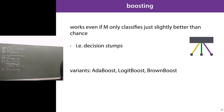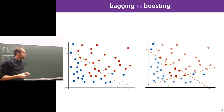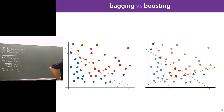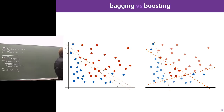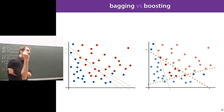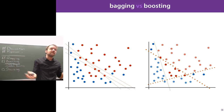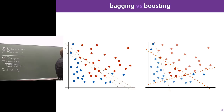Comparing bagging to boosting for linear classifiers on a nonlinear dataset: bagging gives some variation but classifiers generally pick roughly the same area, so there's not a lot of variance in the ensemble. With boosting, re-weighting data means easy points get much lower weight, producing much more variation in the ensemble and a much more nonlinear decision boundary in the end.